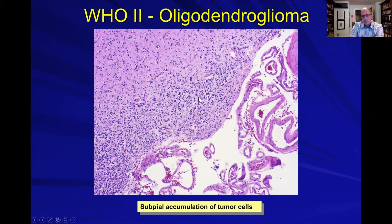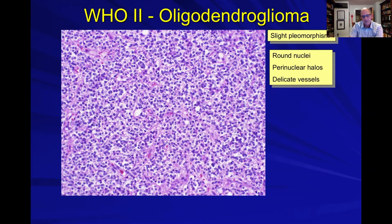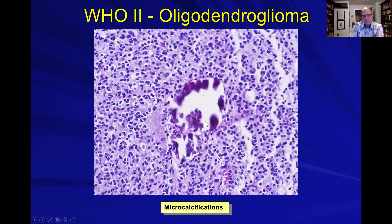Here's a picture of what these look like — an example of how it gets right out to the pia. Here's the pia, and you can see this dense collection of tumor cells right up next to it. Here's a good example of what those cells look like with that halo effect, giving you that fried egg appearance. If you step back, you can also start to appreciate a little bit of that chicken wire vasculature. They have calcification as well.